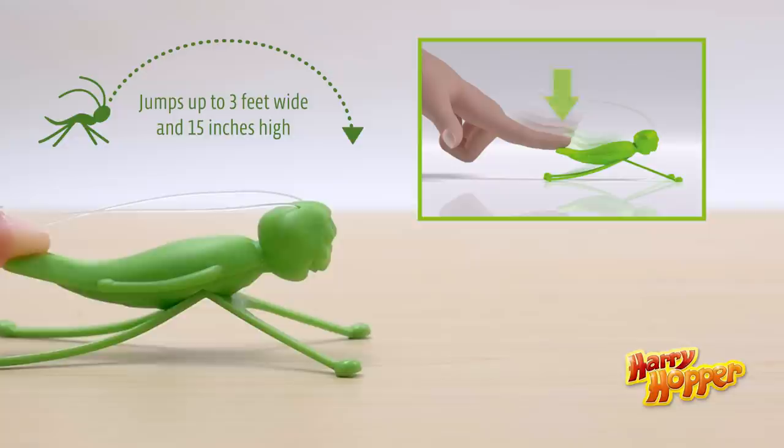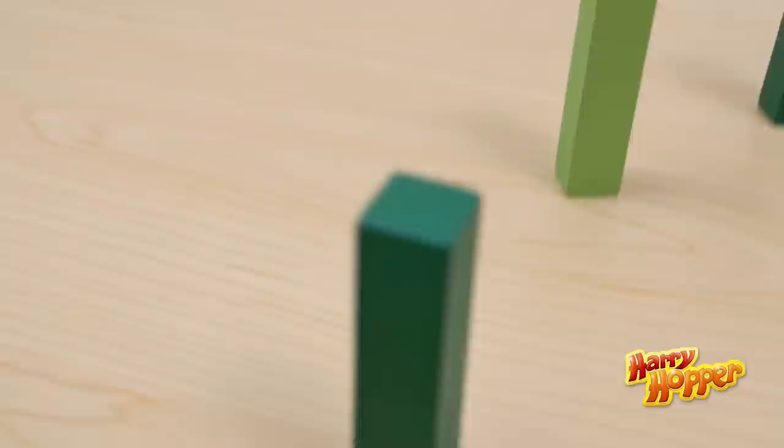To make your grasshopper jump into the air, simply press down on its wingtips and let go.